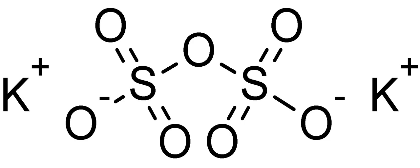Potassium pyrosulfate, or potassium disulfate, is an inorganic compound with the chemical formula K2S2O7.